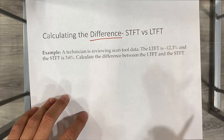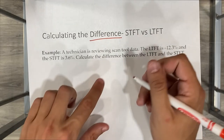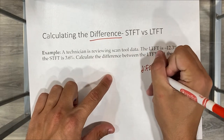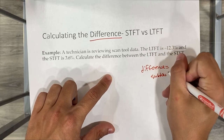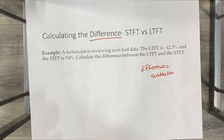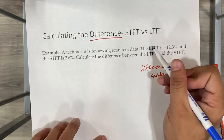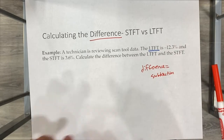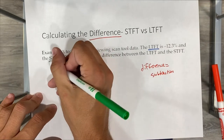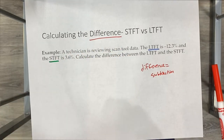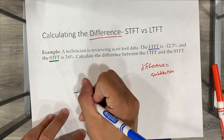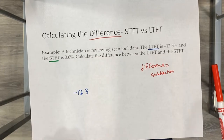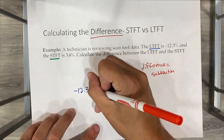A difference problem means subtraction. So for this problem, all we're going to be doing is taking our long-term fuel trim and subtracting our short-term fuel trim, whatever the values are. In this particular example, our long-term fuel trim is negative 12.3, and then we're subtracting — finding the difference.